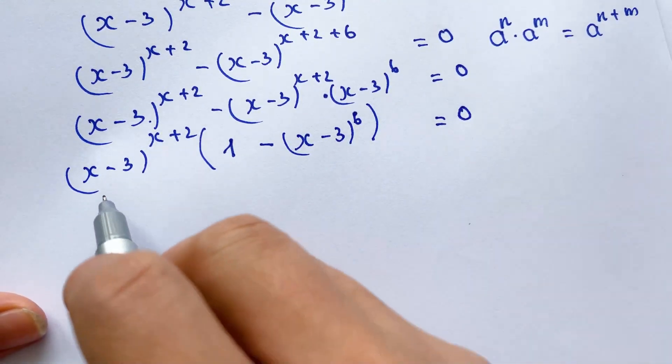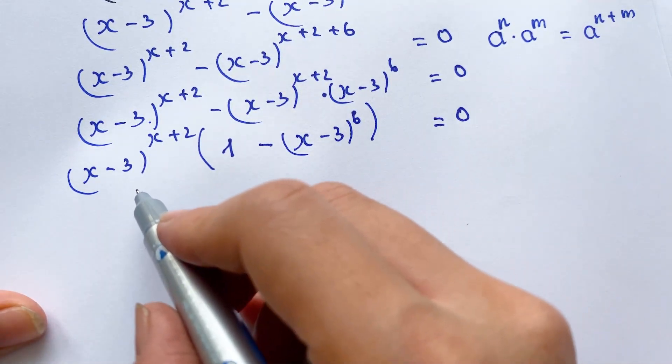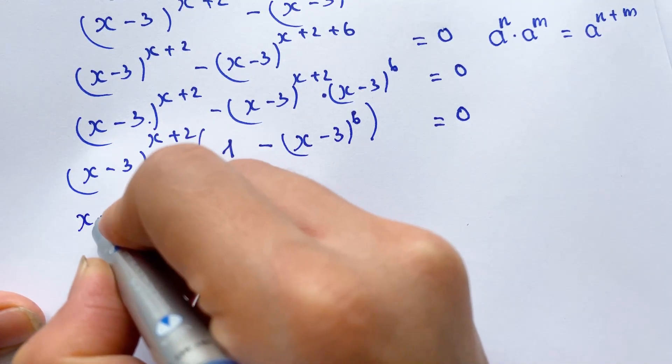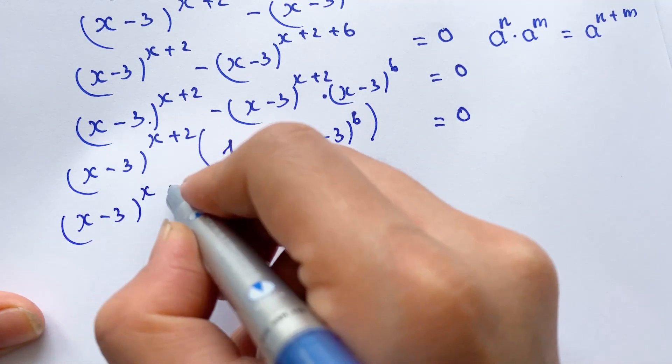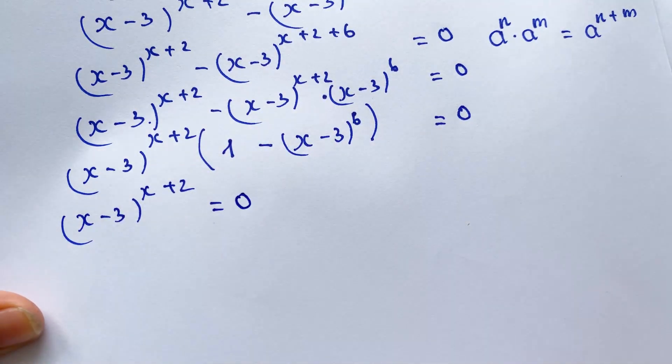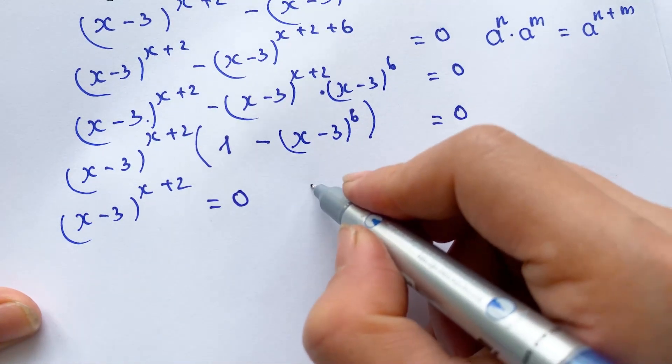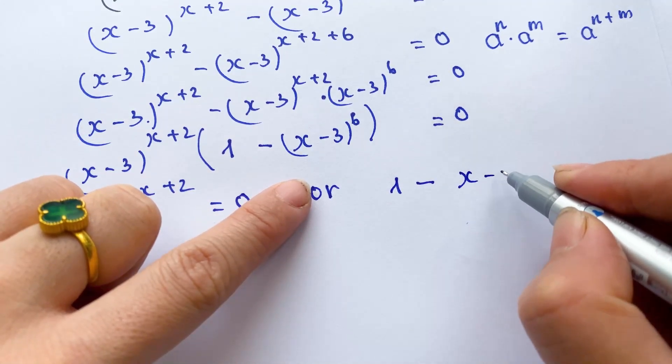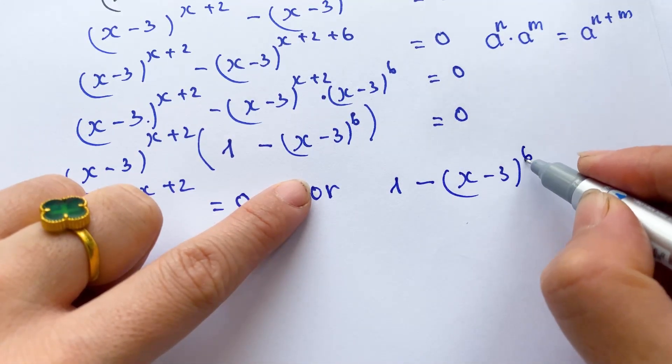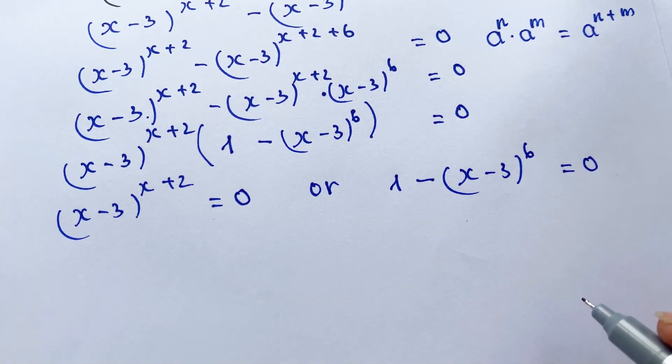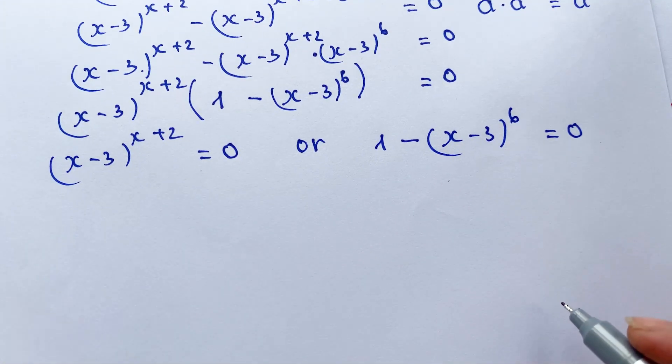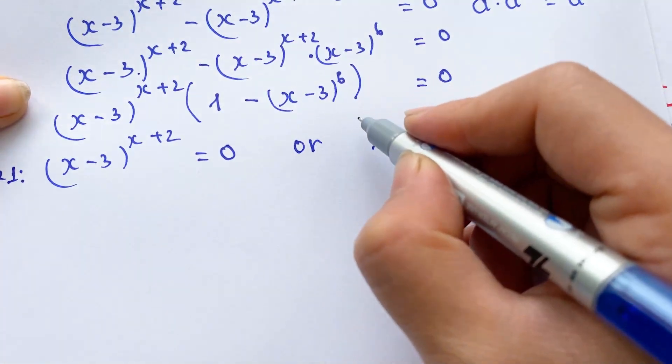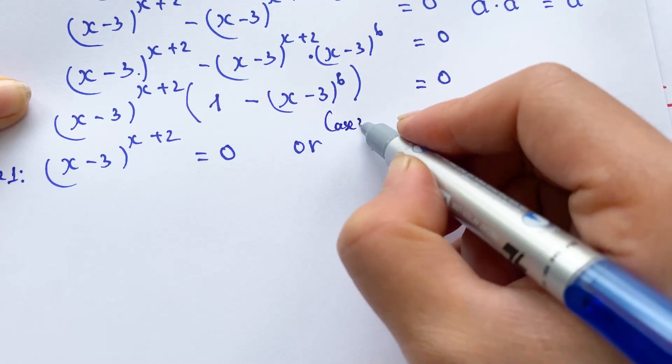And so, for the equation, I think it's quite simple. We have two cases: (x-3)^(x+2) equals 0, or 1 minus (x-3)^6 equals 0. So, you can put case 1 and next one we have case 2.